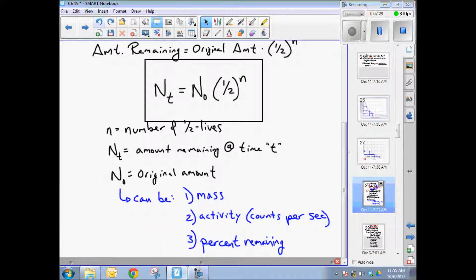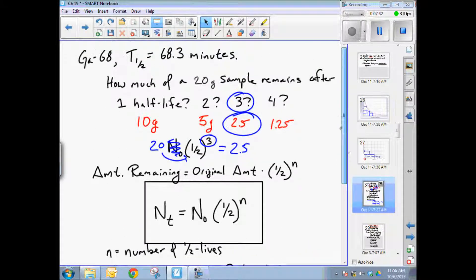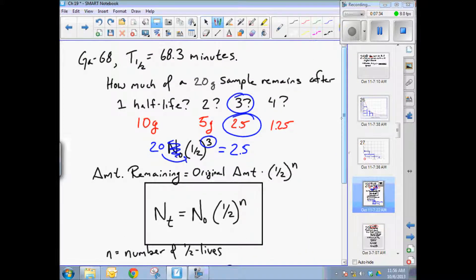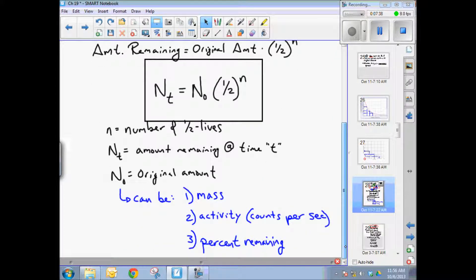Now n sub-zero, or the original amount, can be a bunch of different things. In our example here, it was a mass. We started with 20 grams of the original material, but it can also be activity in counts per second.